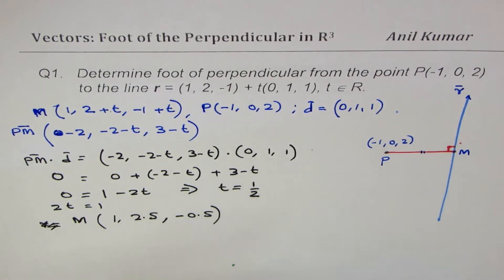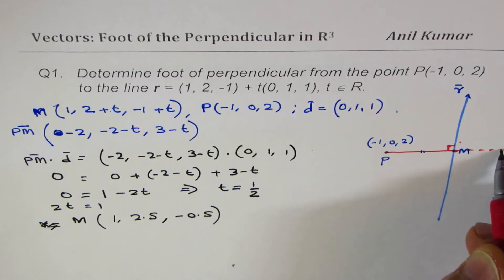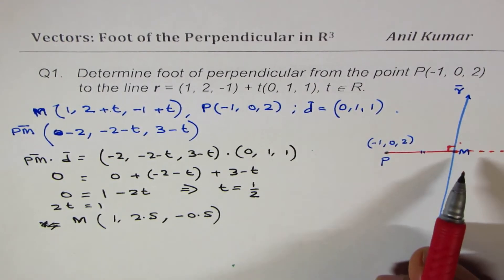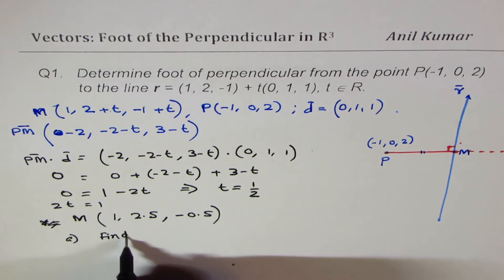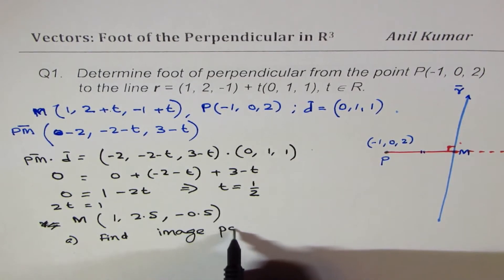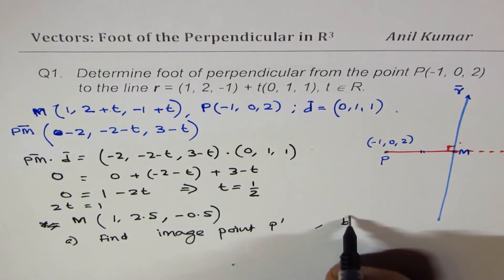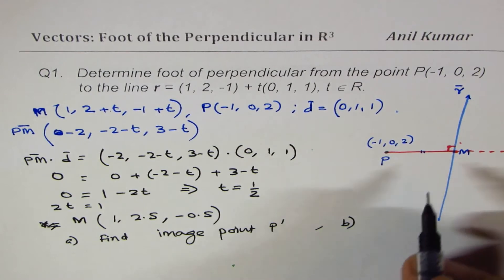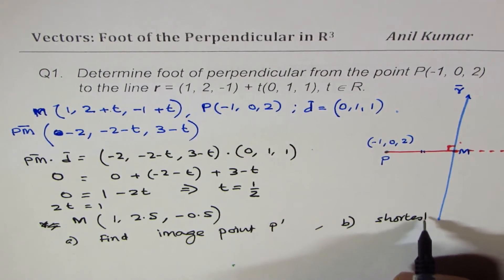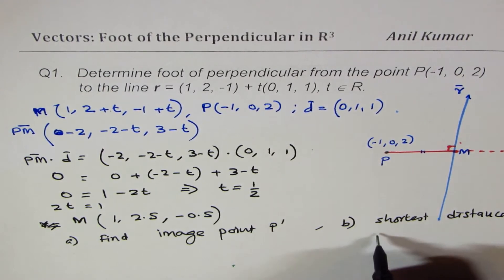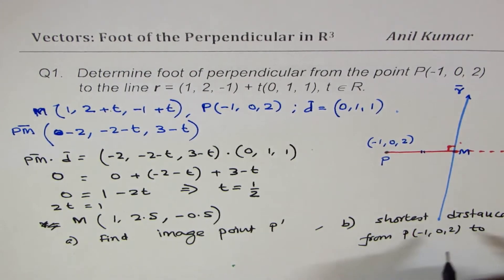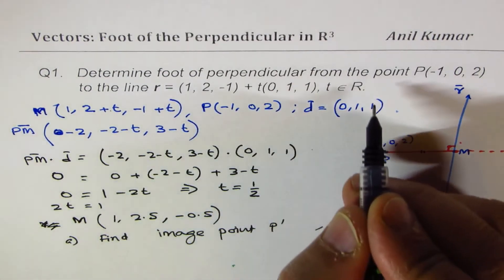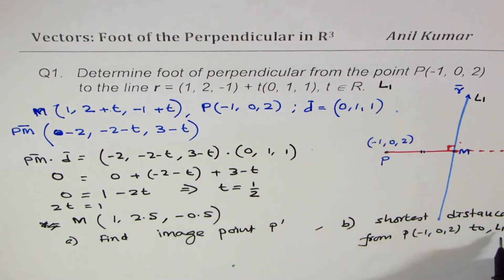In the actual question, we need to find the image point — a point P dash at the same distance on the other side. I'll leave two more parts as exercises for you: (a) find the image point P dash, and (b) find the shortest distance from point P(-1, 0, 2) to the line L1. Since you know the points, you can find the distance using the distance formula.